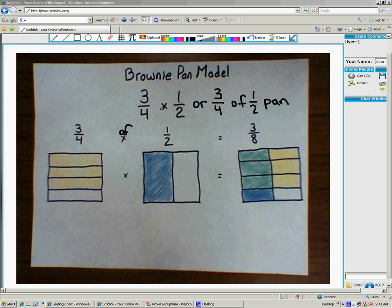This is an example of the brownie pan model for multiplying fractions that the kids are currently using in class. While this problem is rather simple, and by looking at the way the problem is set up, most of the kids would be able to figure out how multiplication of fractions works.